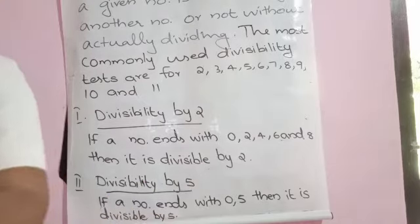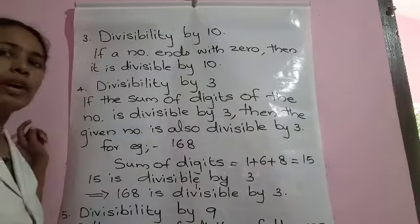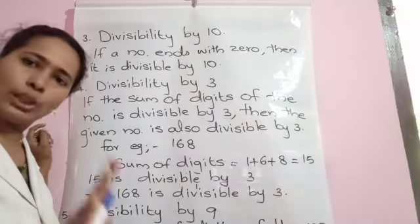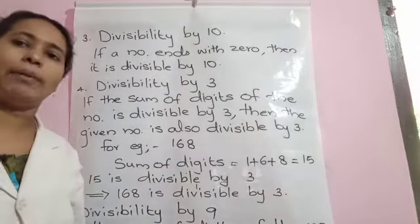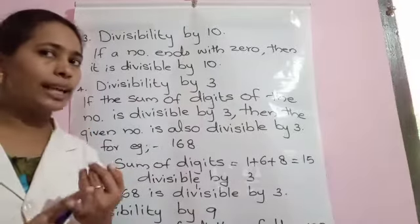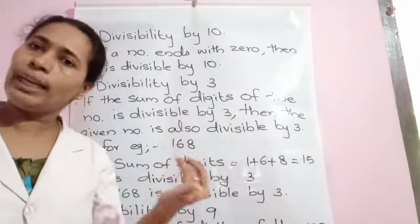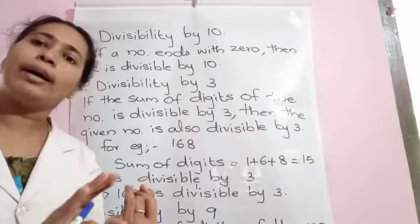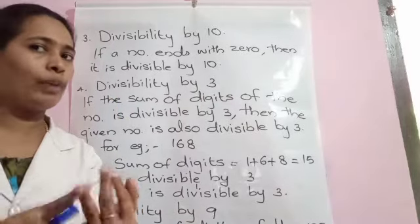Let us move to divisibility by 10. If a number ends with 0, the given number is surely divisible by 10. Whatever be the number which ends in 0 is completely divisible by 10. So for 2, a number ends with 0, 2, 4, 6, or 8 — completely divisible by 2. If a number ends with 0 or 5 — divisible by 5. If a number ends in 0 — completely divisible by 10.